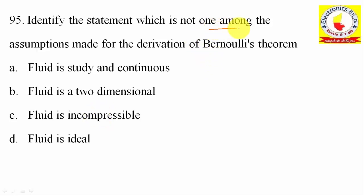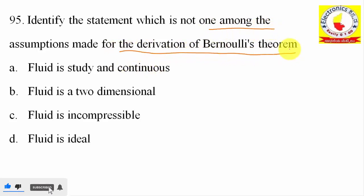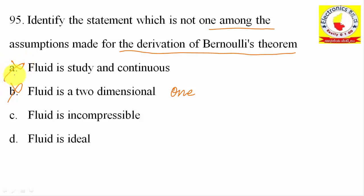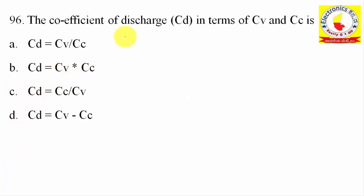95th question: Identify the statement which is NOT one of the assumptions for Bernoulli's theorem. Options include: fluid is continuous and steady, fluid is two-dimensional, fluid is one-dimensional, fluid is incompressible, and fluid is ideal. The incorrect assumption is that fluid is two-dimensional — it should be one-dimensional. Option B.